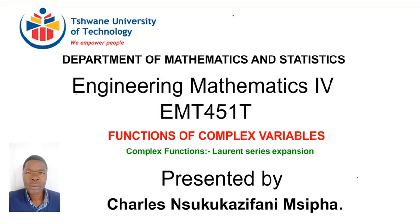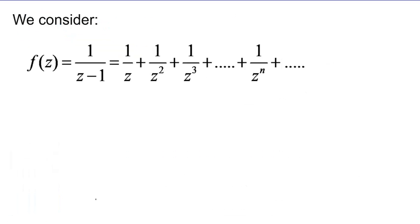To make some sense of this, let's consider a function of this nature: f(z) equals one over z minus one.